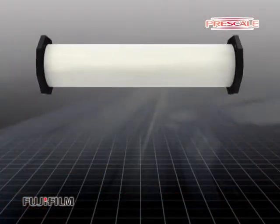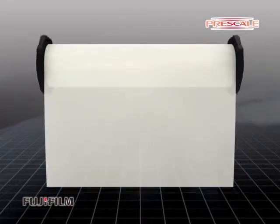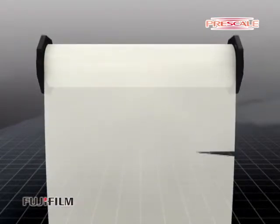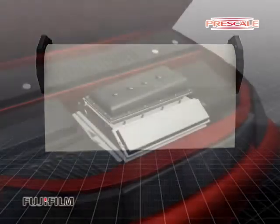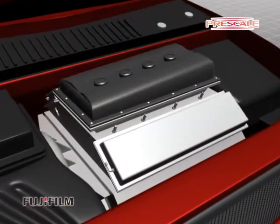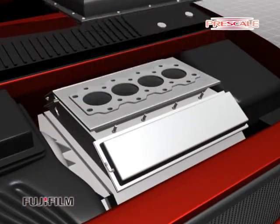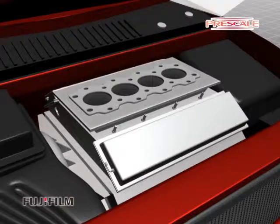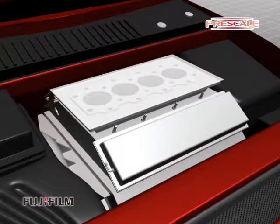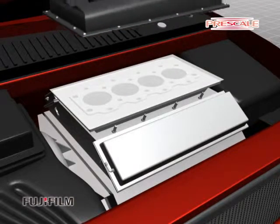To do this, cut Prescale a little bit larger than the exact gasket size to be measured. Set the piece of Prescale onto the actual gasket position and apply the prescribed torque to the bolts.